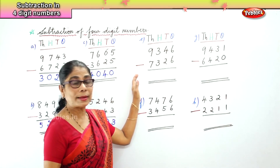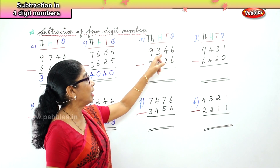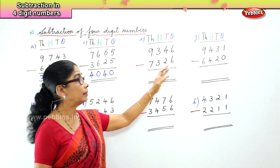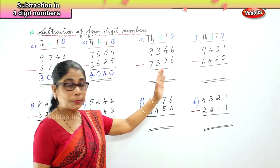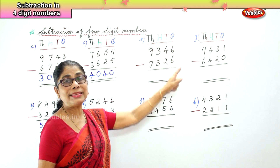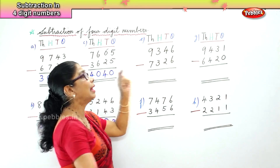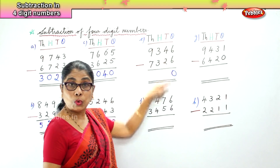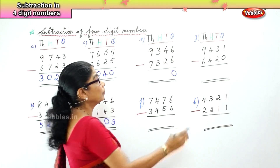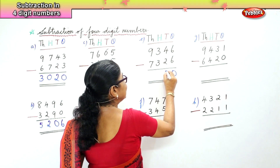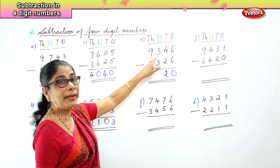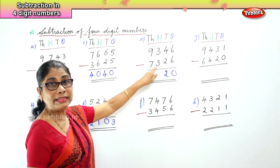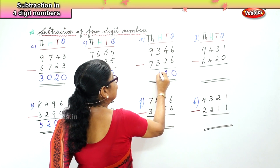Let's go to another sum: 9,346 take away 7,326. In the ones place, 6 ones take away 6 ones is 0. In the tens place, 4 tenths take away 2 tenths — 4 minus 2 is 2. In the hundreds place, 3 hundreds take away 3 hundreds — 3 minus 3 is 0.